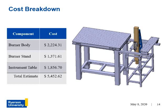The cost breakdown of the project components and machining costs: the burner body will cost approximately $2,200, the burner stand will cost $1,400, and the instrument table will cost around $1,800. The total cost is estimated to be around $5,500. The image on the right shows the burner stand and the table, and how they would be arranged together with the burner stand nested between the instrument table and the side wing.